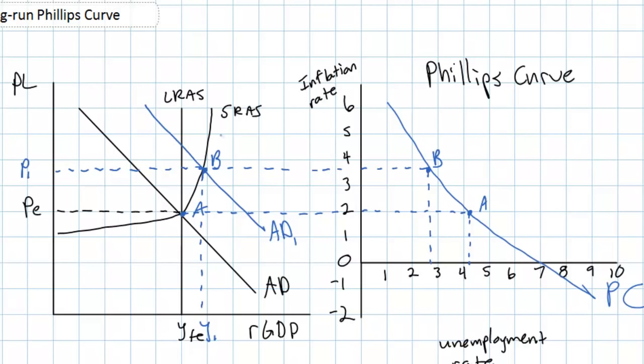In the short run it is possible for an economy to produce beyond its full employment level of output. Because there is some unemployment even when an economy is producing at its full employment level, an increase in aggregate demand can increase output. In the short run workers can be hired, firms can increase their output, there will be some inflation, but due to excess capacity from frictional and structural unemployment, output can temporarily increase beyond the full employment level.